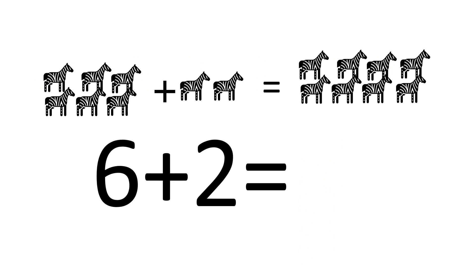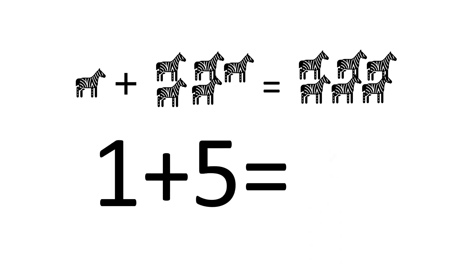How many zebras are there? 6 plus 2 is equal to 8. How many zebras are there? 1 plus 5 is equal to 6.